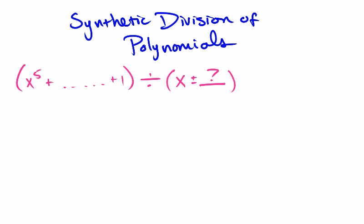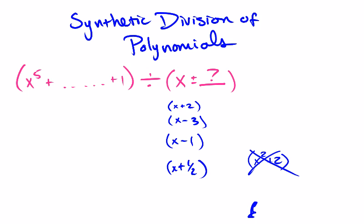As long as I have something being divided by, for example, x plus two, or it's being divided by x minus three, or it's being divided by x minus one. The list goes on. It could even be x plus one half. As long as it's x and then a number, we can do synthetic division of polynomials. If it's not that, if it's something like x squared plus two, that's a no-go. You cannot do synthetic division with that.